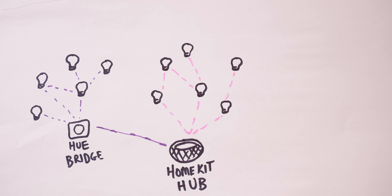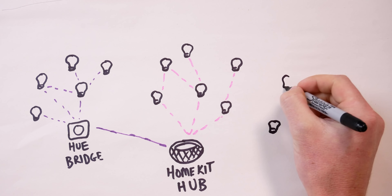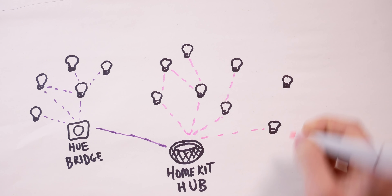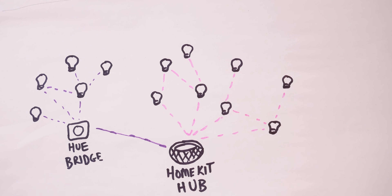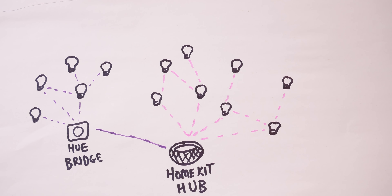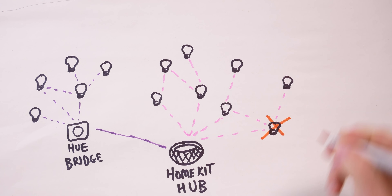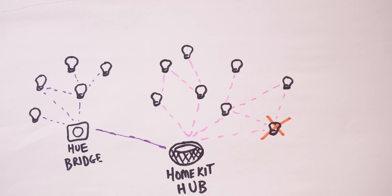Thread devices have the ability to interconnect, creating a mesh network and expanding their reach even further. They can connect directly to the border router or HomePod mini, or they can connect to other Thread devices. This all happens behind the scenes — you don't have to do anything. And like I mentioned, a Thread mesh network has the ability to self-heal, so if one device drops out, it will readjust to the next best connection and keep everything running.